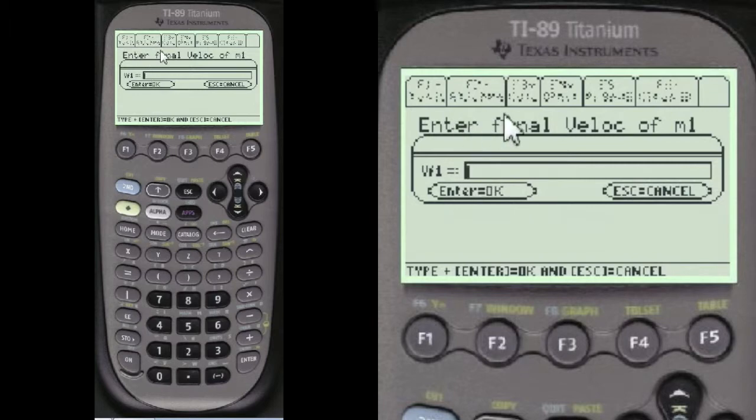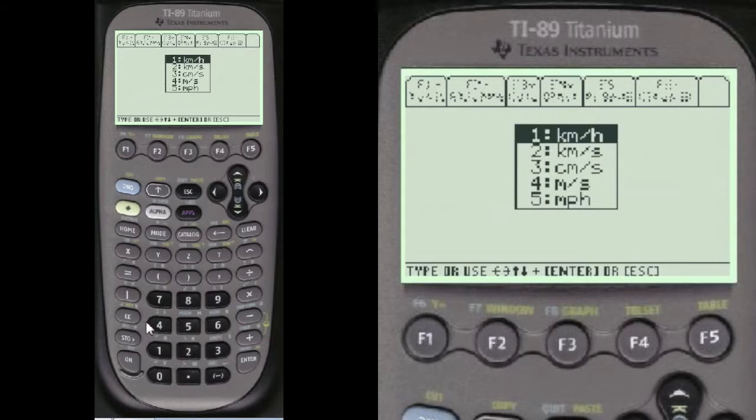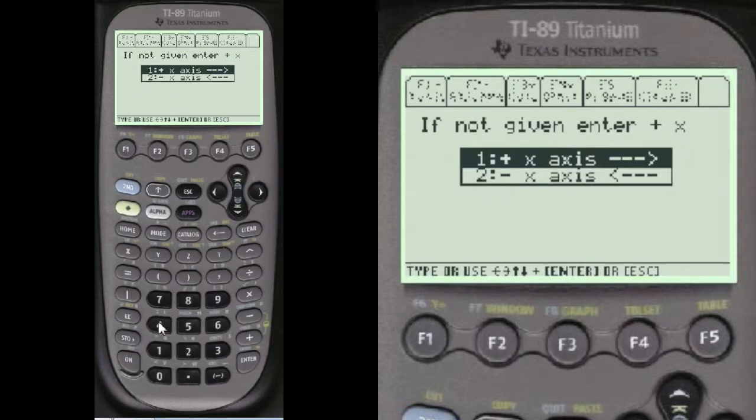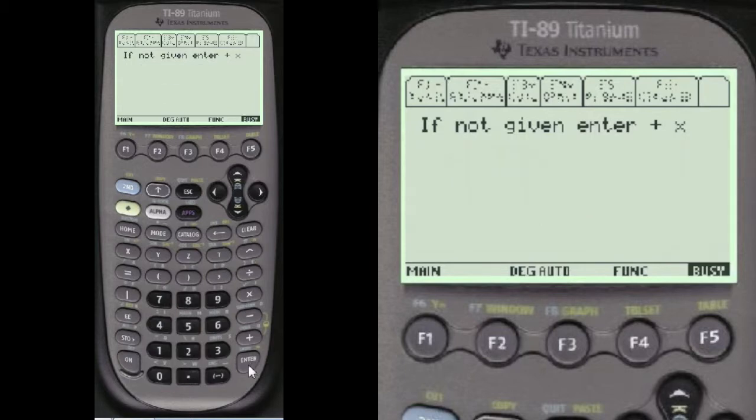For instance, here's the final velocity. And we're going to have to press alpha before you enter anything to the end of these entry lines here. So I'm going to press alpha 18, number 4 meters per second. And this just shows direction. If it's not given, you just press number 1 or choose number 1.